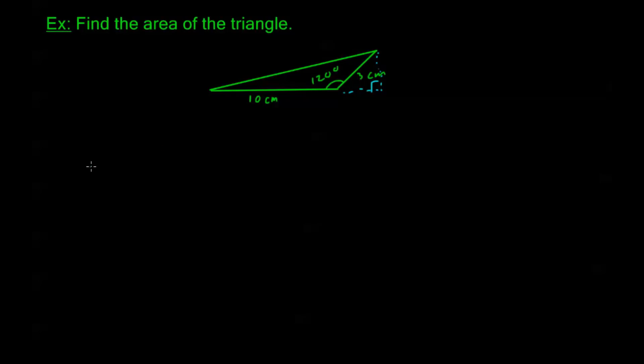Or I can simply plug into my formula. The area of this triangle is 1 half a, which is 3, times b, which is 10, times sine of 120 degrees. So the 1 half and the 10 cancel. This is 15 sine of 120 degrees.